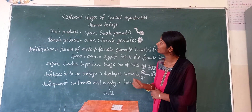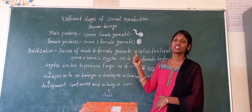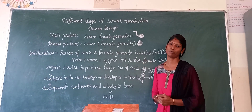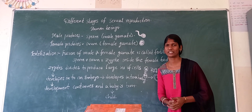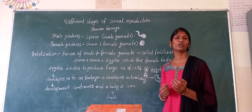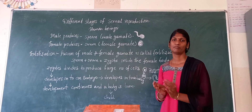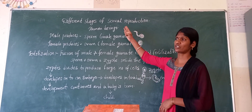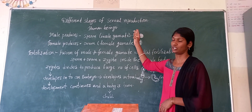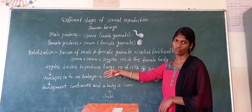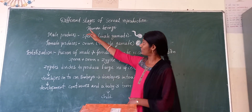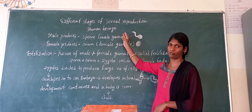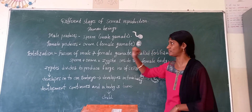Today the topic is about different stages of sexual reproduction in the human race. So what is the meaning of sexual reproduction? The movements of male and female will be controlled. In this section of reproduction there are some steps. Let us see the different stages of sexual reproduction in the human race — how it is going to happen.